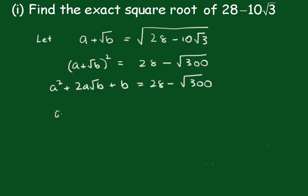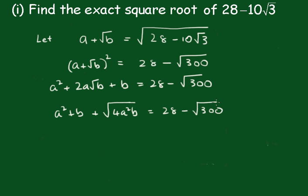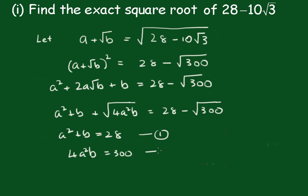Therefore a squared plus b, plus — taking this inside — square root of 4a squared b, equals 28 minus the square root of 300. So a squared plus b equals 28 — call that equation 1 — and 4a squared b equals 300 — call that equation 2.